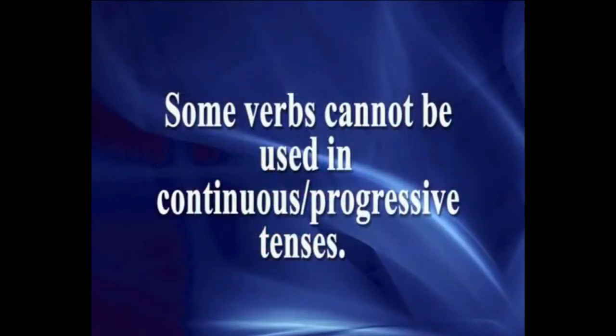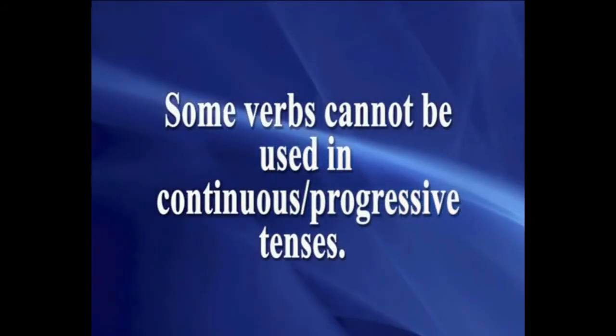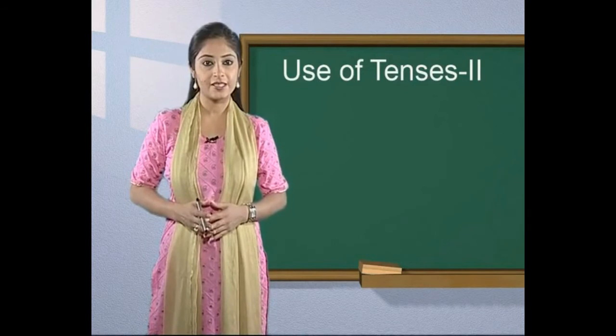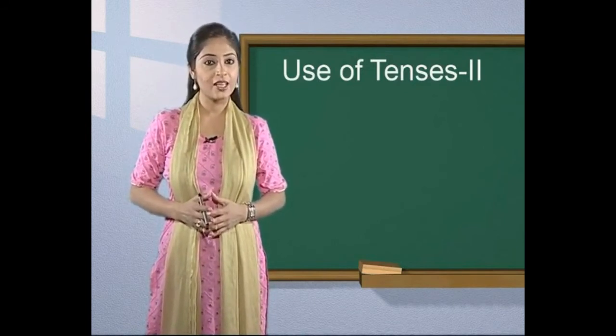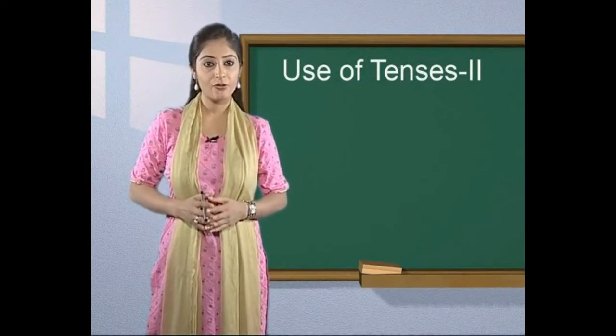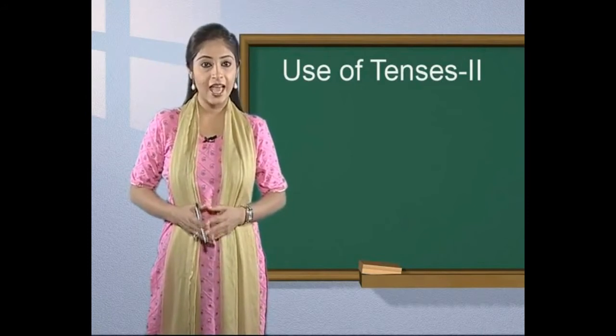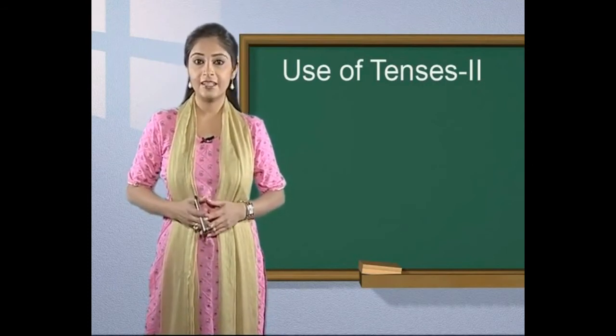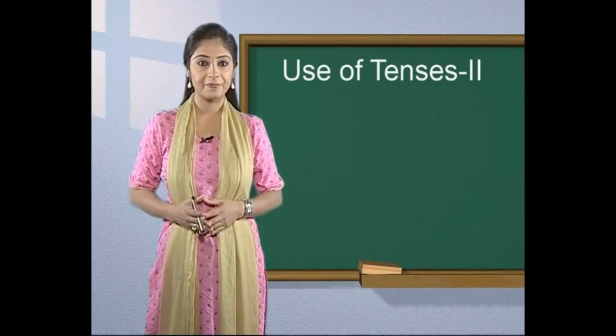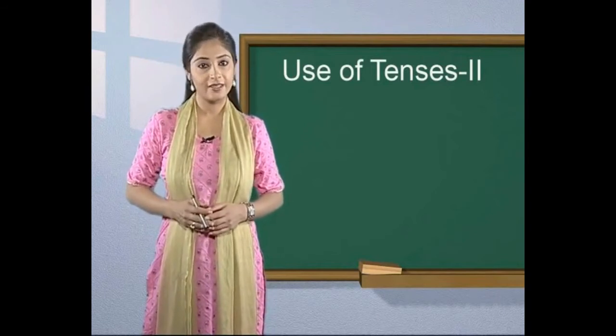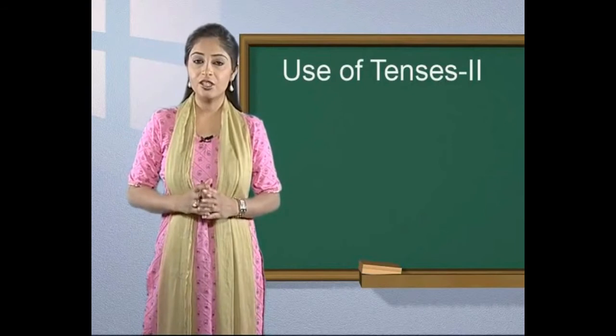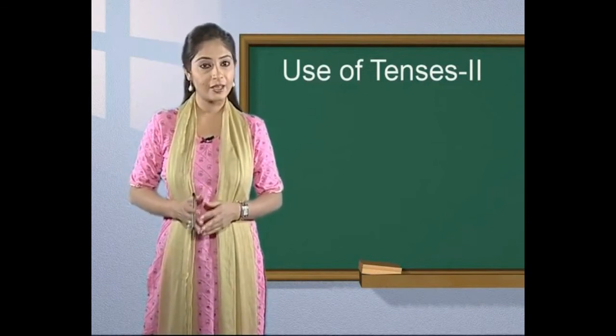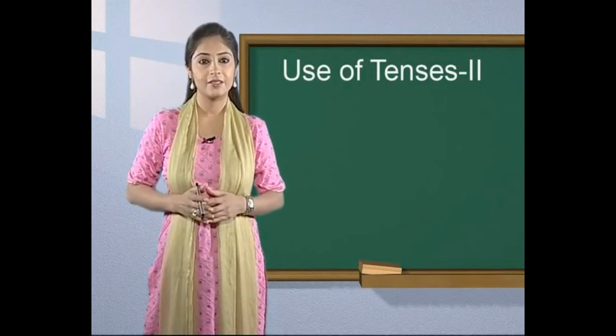Some verbs cannot be used in continuous progressive tenses. We often use the past continuous tense to set the scene in stories. We use it to describe the background situation at the moment when the action begins. Often, the story starts with the past continuous tense and then moves into the simple past tense.